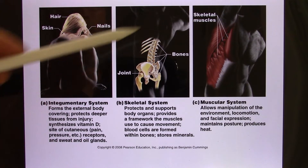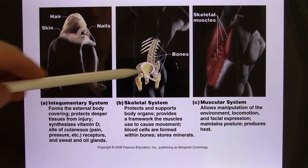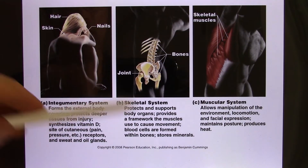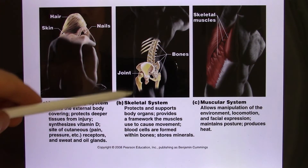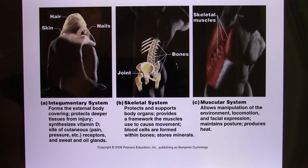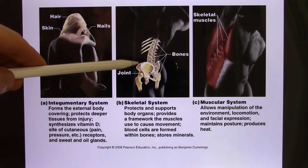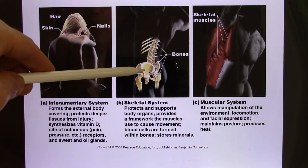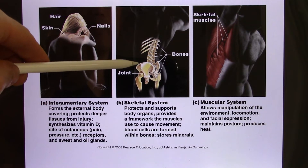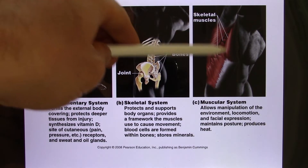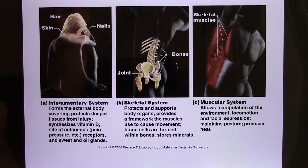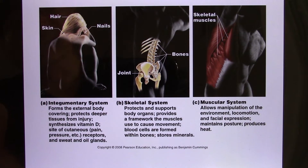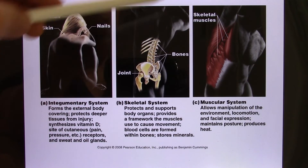The skeletal system and muscular system work hand in hand together. Unit 2 covers the skeletal system and Unit 3 covers the muscular system. The skeletal system has attachment points for muscles — muscles attach to bones, and when a muscle contracts, it brings one bone closer to another, creating movement.